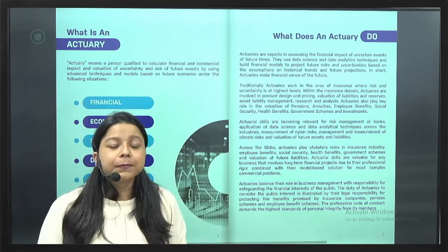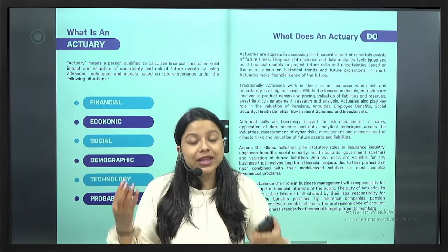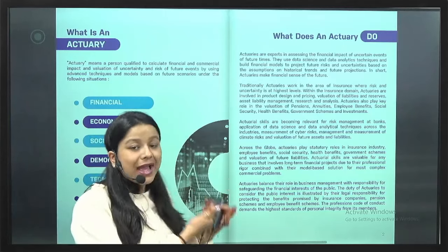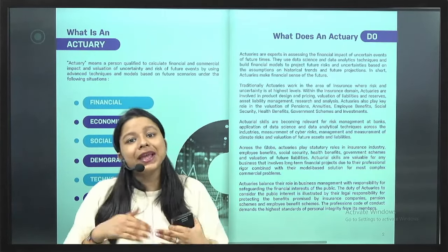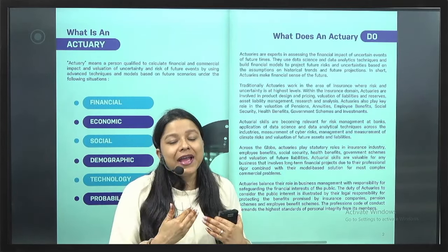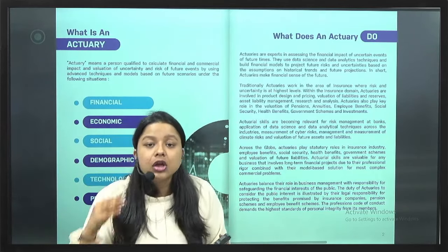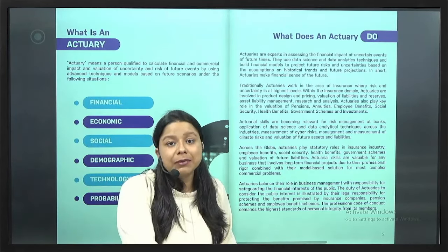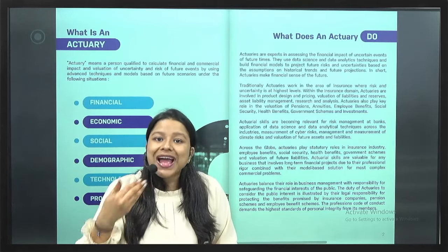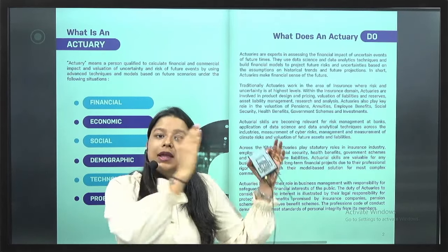Where do actuaries work? There are 3 sections. In the traditional field, we have Life and General Insurance. For example, anyone in your family might have bought a whole life insurance or a term assurance. If I take a term assurance till age 99, and I die below that age, my dependents receive a sum of money. I pay premiums annually, quarterly, or monthly. How we calculate this premium is what we do as an actuary.